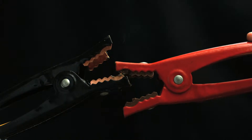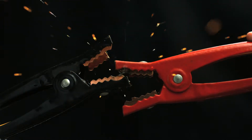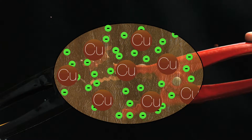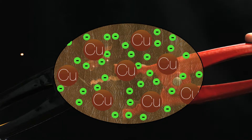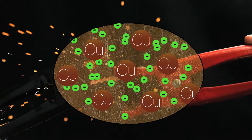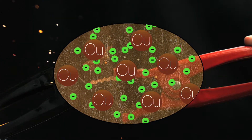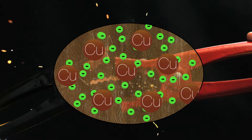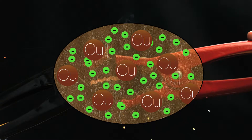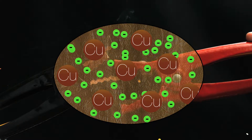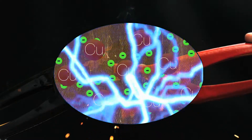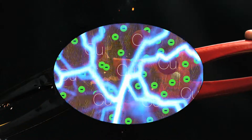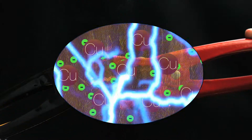Metals are the best conductors of electricity because their outer electrons are delocalized. The structure of metals can be likened to atoms embedded in a sea of electrons. This sea of electrons can be mobilized by supplying voltage to create an electrical current, allowing the metal to conduct electricity.